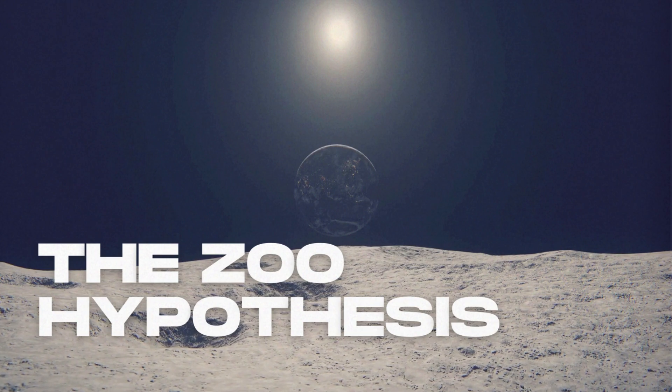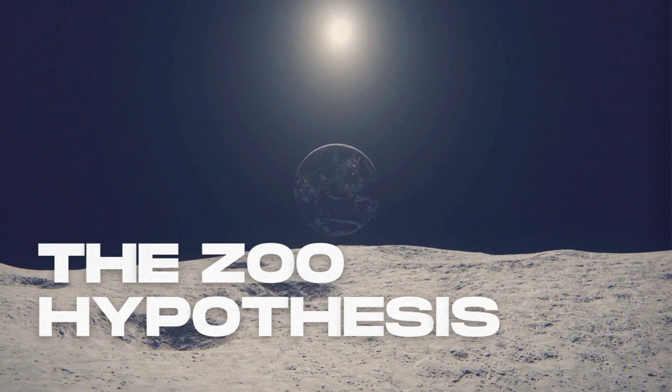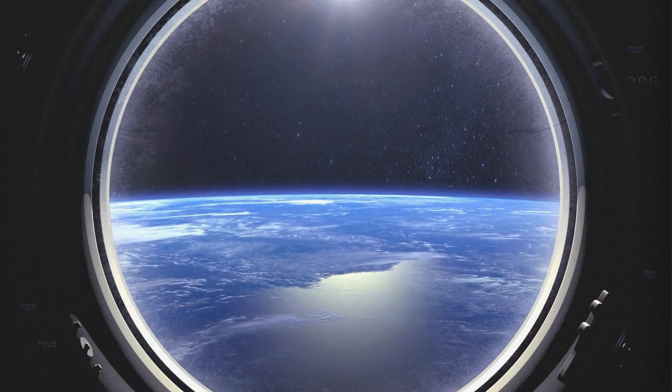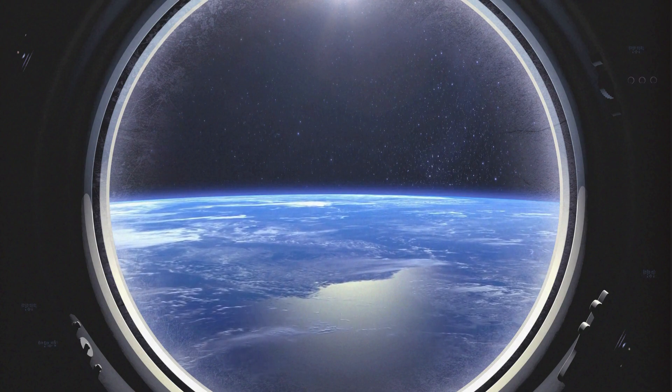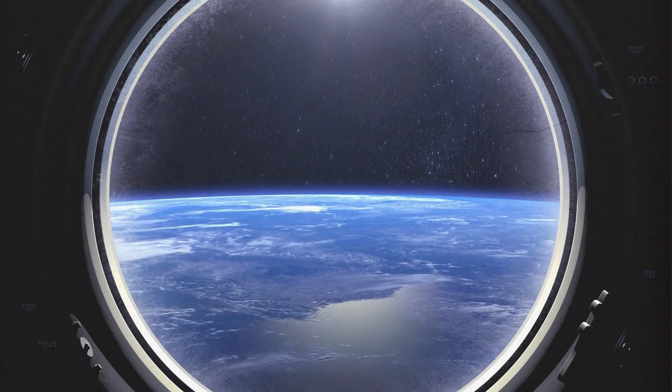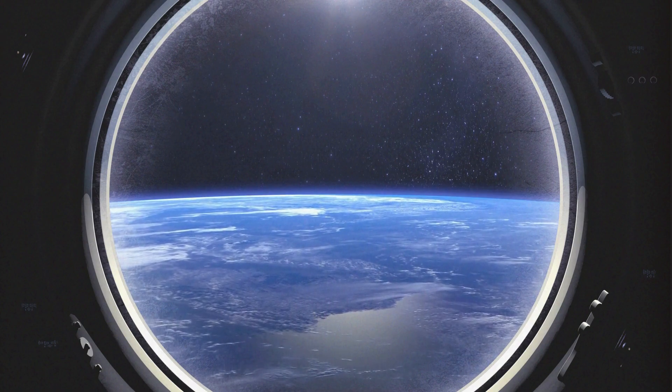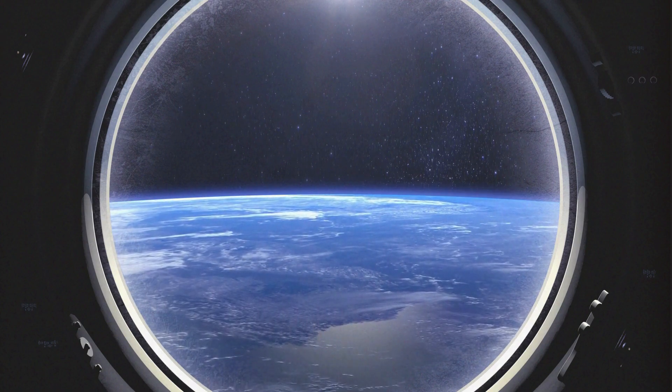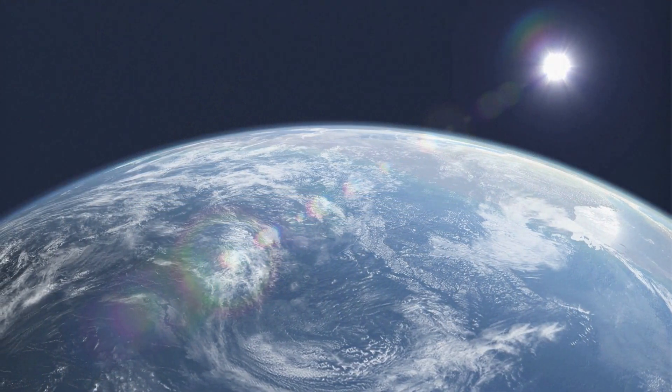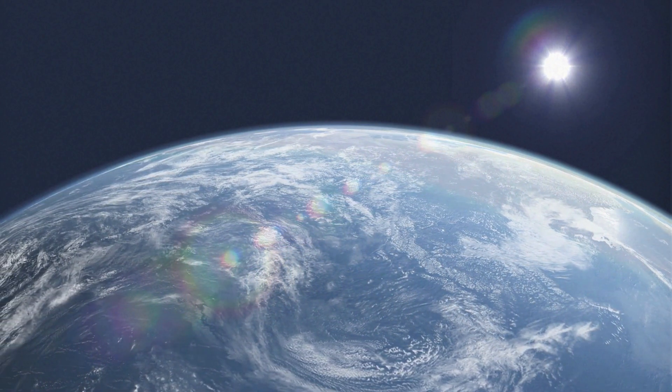The Zoo Hypothesis is a speculative theory about why extraterrestrial civilizations might intentionally avoid contacting Earth. It suggests that advanced alien species could very well be aware of our planet and its inhabitants, but refrain from interfering to allow natural development and evolution. Much like a zoo, where humans observe animals without interacting directly. This would give human civilization the time and space to evolve without external influence.